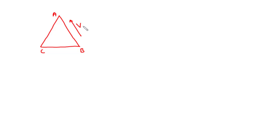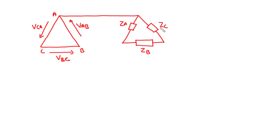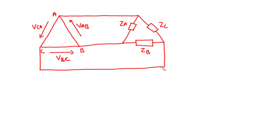We have the line voltages Vab, Vbc, and Vca. These are called the line voltages and they are equal to the phase voltages as well. This source is feeding a delta-connected load of impedances Za, Zb, and Zc. This load may be balanced or unbalanced. If the load is balanced it means that the phase impedances Za, Zb, and Zc are equal, and if they are unbalanced it means the phase impedances are not equal.